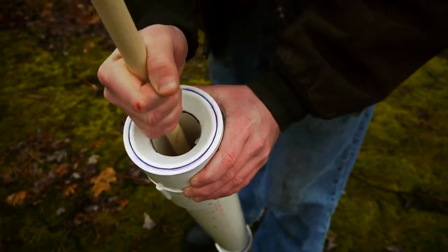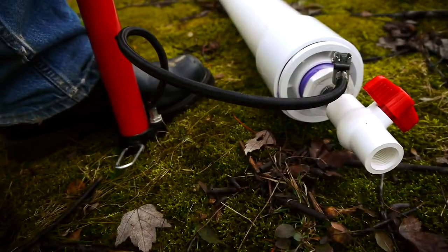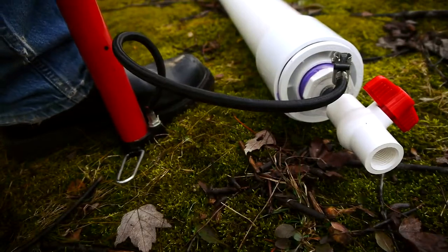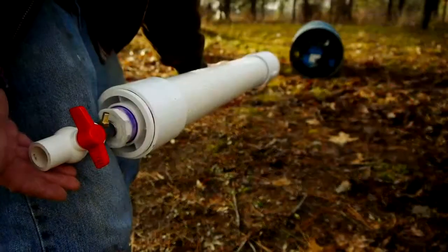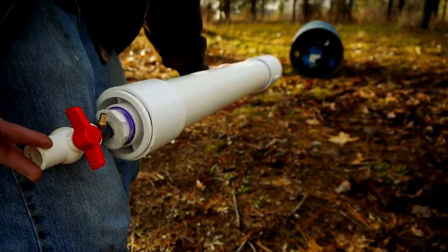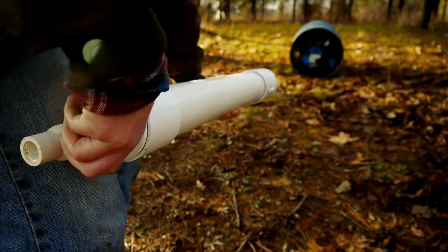With a slug loaded, the chamber can be pressurized with 15 pumps from a bicycle pump or 40 PSI from an air compressor. Always keeping the barrel in a safe direction, when ready to fire, the ball valve is opened.